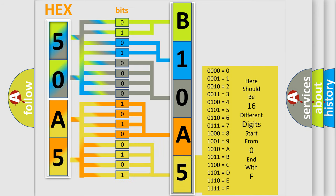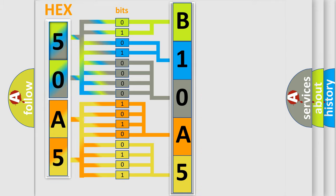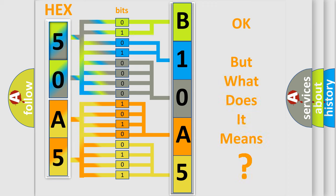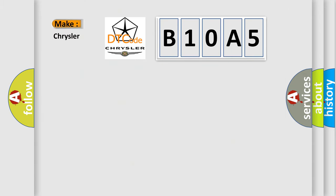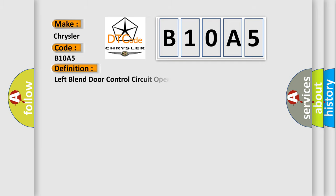We now know in what way the diagnostic tool translates the received information into a more comprehensible format. The number itself does not make sense to us if we cannot assign information about what it actually expresses. So, what does the diagnostic trouble code B10A5 interpret specifically for Chrysler car manufacturers? The basic definition is: Left blend door control circuit open.